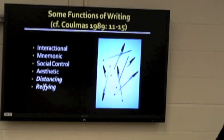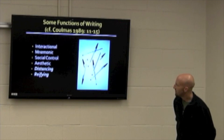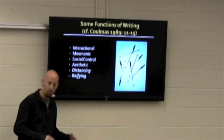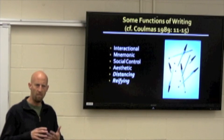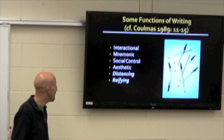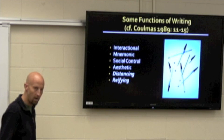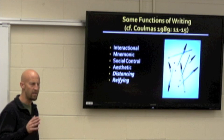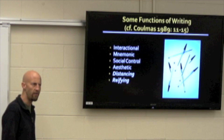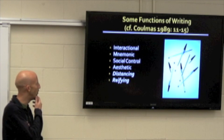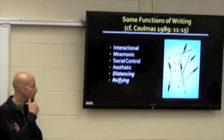First is the interactional function — through emails or letters, we're communicating with another human being. There's also the mnemonic function: since a very young age we're taught to use writing to help remember information, whether trudging through difficult abstract territory or taking notes in a lecture. And social control is a really interesting one that's come up in my dissertation work — writing can present a way of sanctioning how information gets disseminated in a community, and more generally using the modality of writing introduces an aspect of social control.